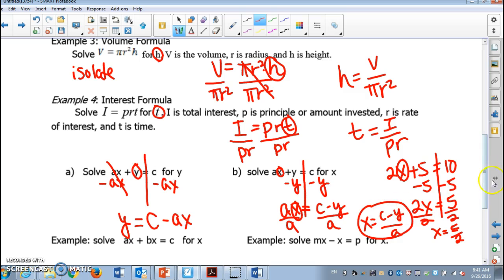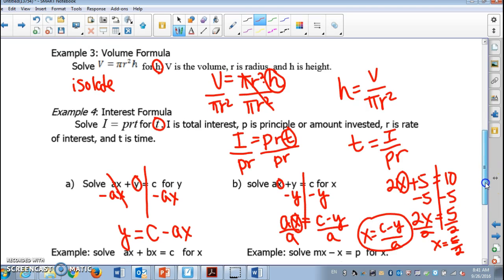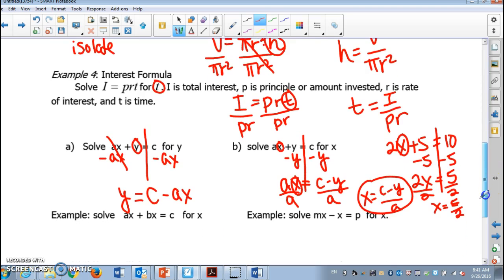We'll do more practice in class. But make sure, when you solve literal equations, all you do is isolate that variable by doing inverse operations. When we have to get rid of more than one variable, we do it step by step. We get rid of the one that is farthest away from the variable. I hope this helps. When I see you in class, we'll do more practice. Have a good day.